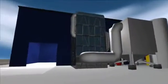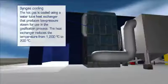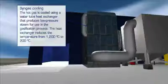Let's take a look outside. The hot syngas exits from the plasma converter at approximately 1200 degrees Celsius and is then cooled in a water tube heat exchanger to reduce the gas temperature to 200 degrees Celsius. During this process, energy is recovered in the form of low pressure steam, and a proportion of that steam is used in the gasification process.